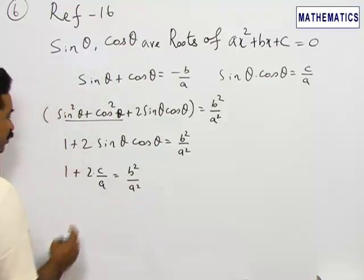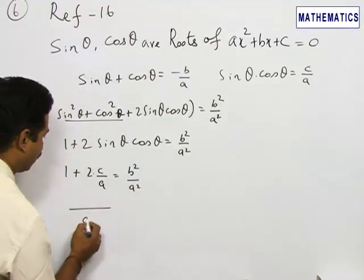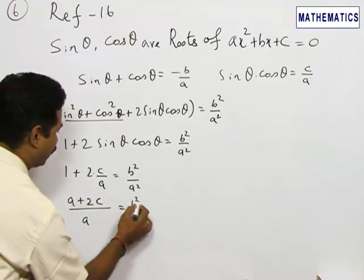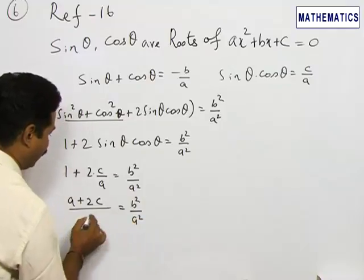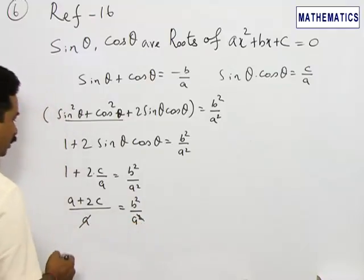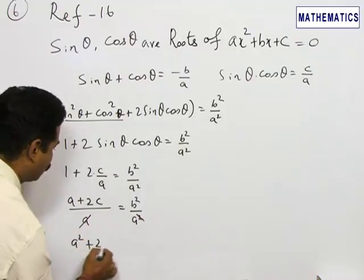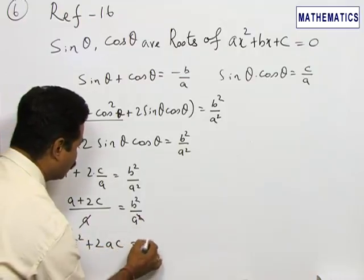If I take LCM, that is (a + 2c)/a = b²/a². Eliminating a on both sides and cross multiplying, we get a² + 2ac = b².